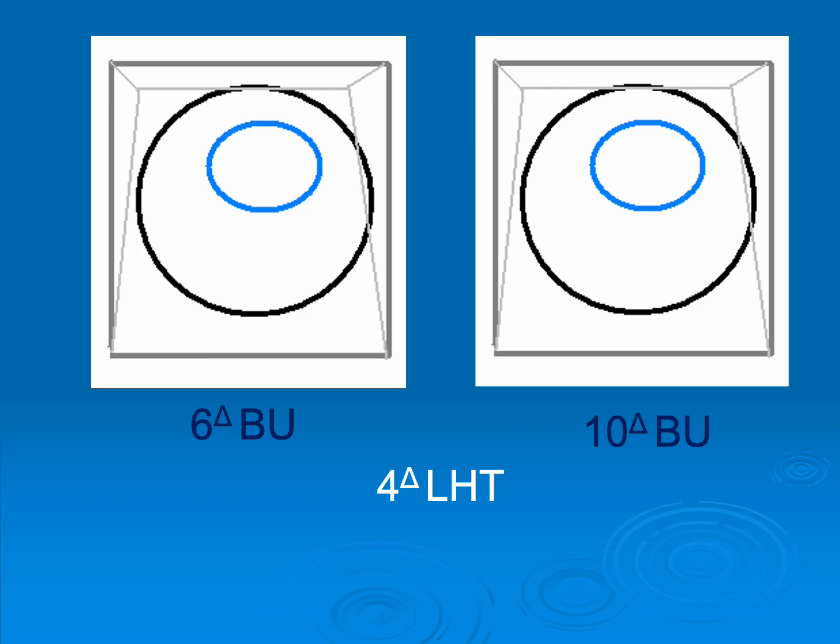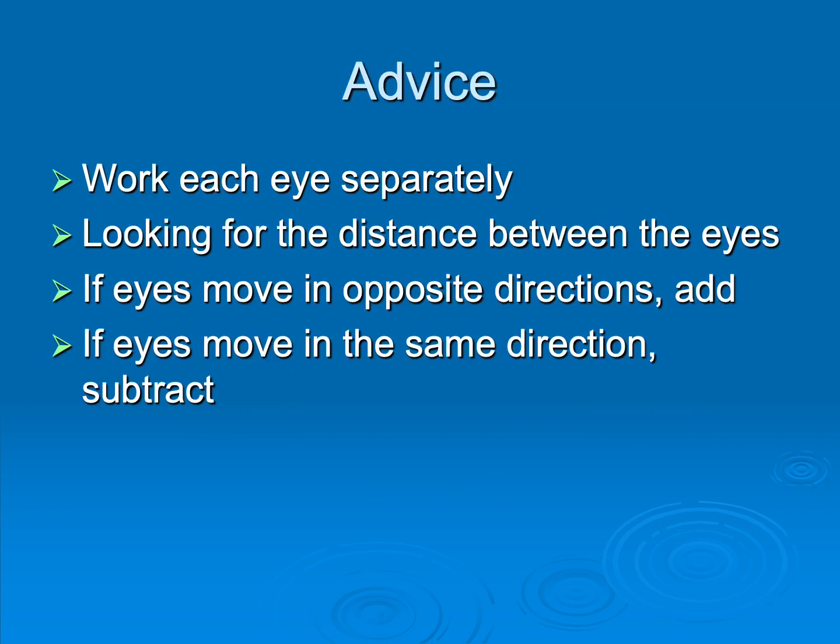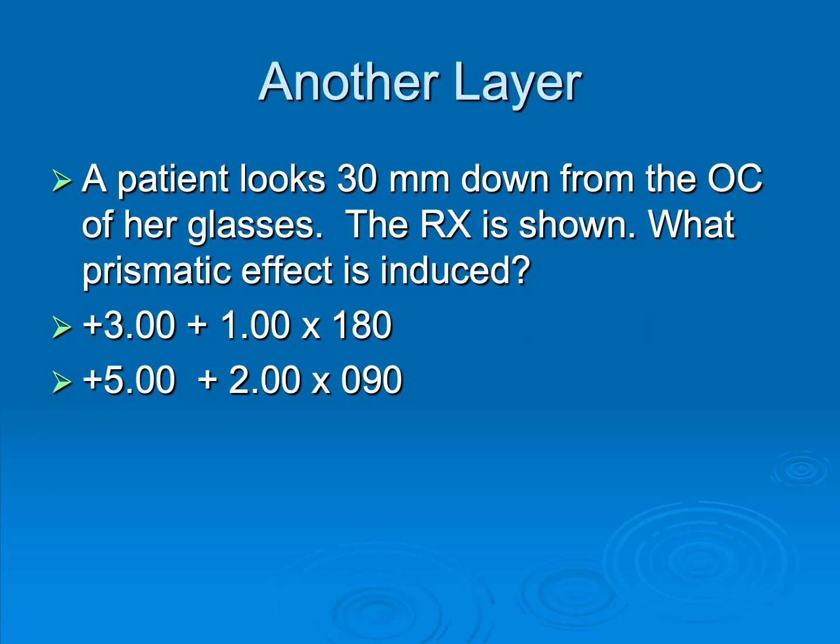Because we sent the right one up by six, the left one up by 10. So the difference between the two eyes, which is what strabismus is, is only four. So this is a four diopter left hyper. And it's left and not a right hyper because the left eye was sent up higher. So here's my advice: work both eyes separately. We're looking for the distance between the eyes. If the eyes are being sent in opposite directions, we're going to add those two values. But if they're being sent in the same direction, we have to subtract. Because again, we're looking for the distance between the eyes.